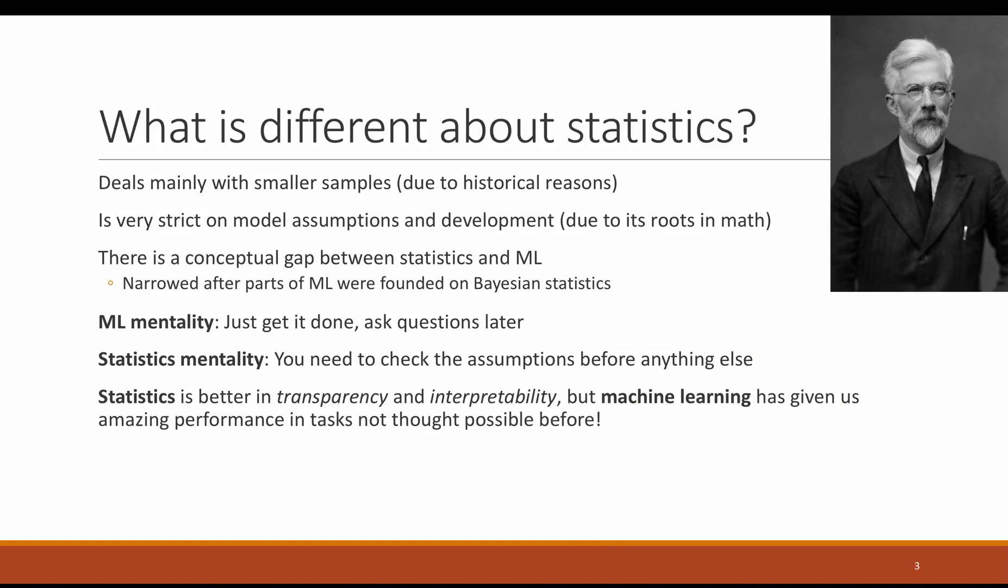Statistics as a discipline is quite different when compared to machine learning, and these differences are mainly due to historical reasons. First of all, statistics usually deals with smaller samples, in contrast to machine learning, which likes more big data. However, this is now changing, since big data becomes more and more relevant, so statisticians have started turning their attention towards it as well.